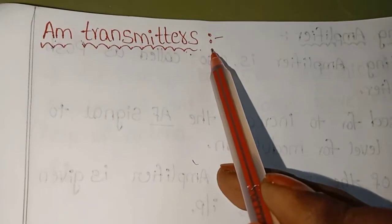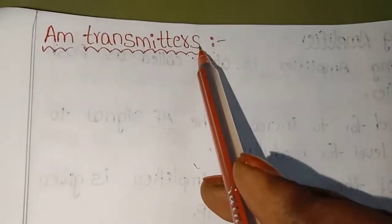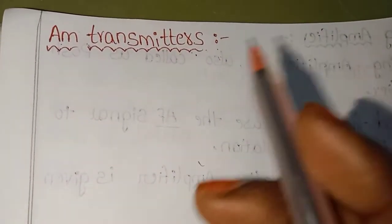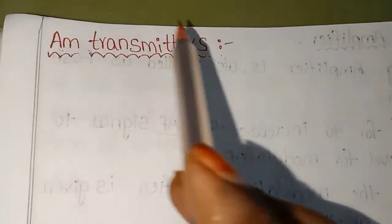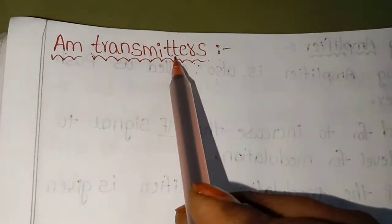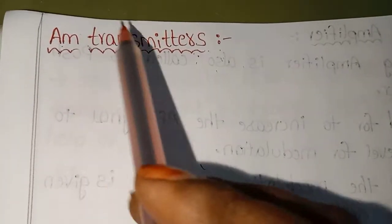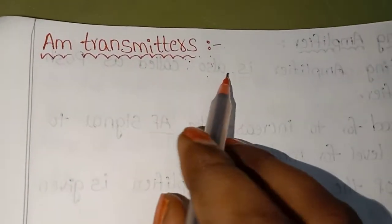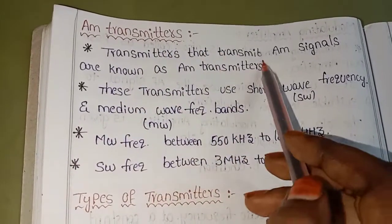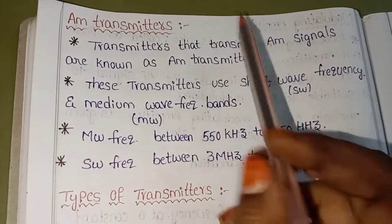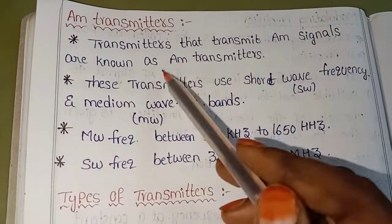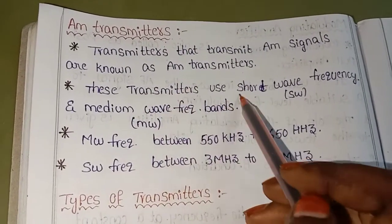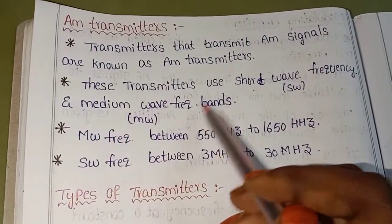AM Transmitter means Amplitude Modulation. Transmitters that transmit AM signals are known as AM Transmitters. These transmitters operate in Short Wave Frequency and Medium Wave Frequency bands.